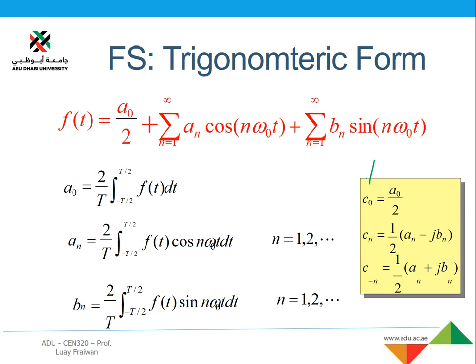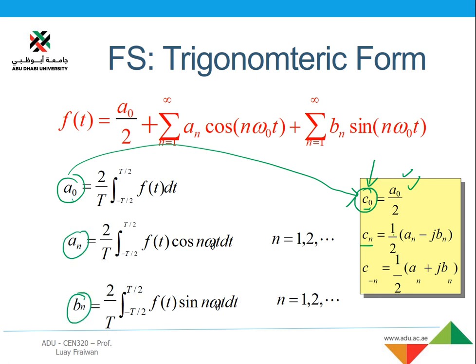The coefficient c_0 from the complex Fourier series representation is equal to a_0 over 2. So if you know a_0 you can get c_0, and vice versa. The key idea is: if you calculate only the c_n coefficients, you can get a_n and b_n from them — for example, c_n equals one half of (a_n minus j*b_n). If you know c_n, you can calculate a_n and b_n. Similarly, if you know c_n and c_{-n} values, or if you know a_n and b_n, you can get the c_n values.